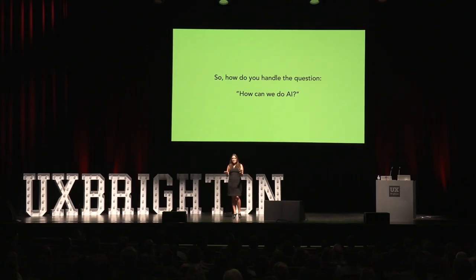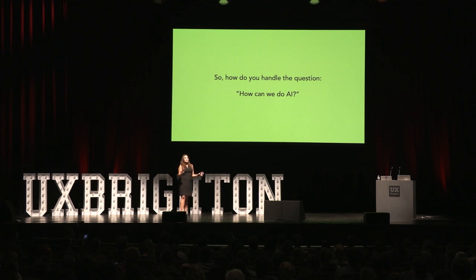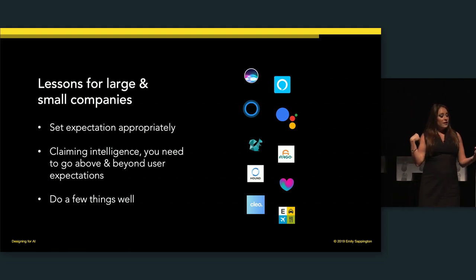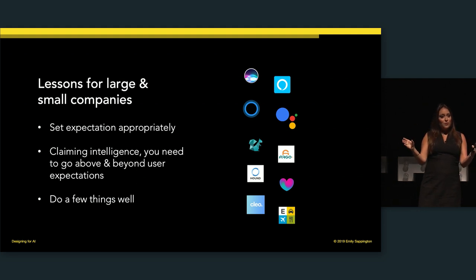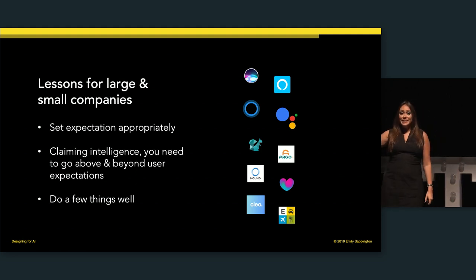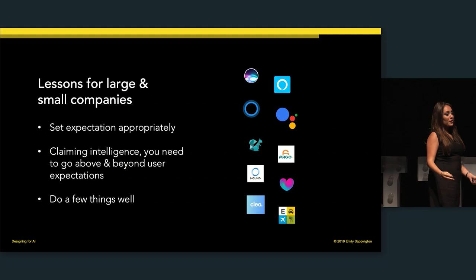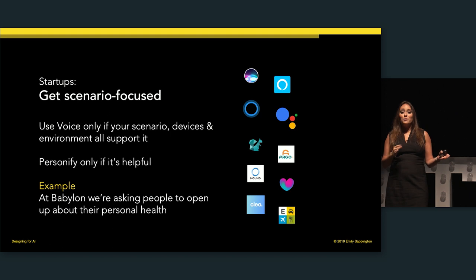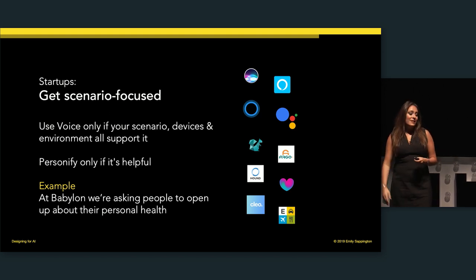I want to arm designers and practitioners of user experience: how do you handle when someone comes up to you and says 'how do we do AI' in a really frantic tone? Think about lessons for large and small companies. It's all about setting expectations appropriately. If you're going to claim intelligence, go above and beyond user expectations. Two-thirds of the sections I walked through were about meeting the bar of being competent, and then you can go tackle being intelligent. It's about doing a few things well — really scope and focus. For startups specifically, get scenario-focused.